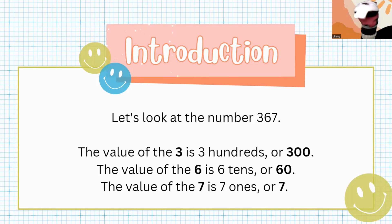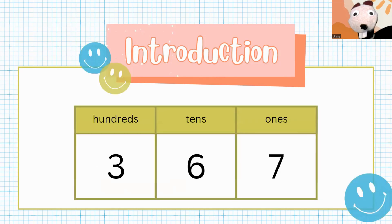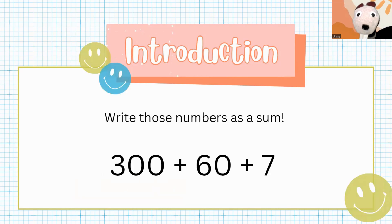Now, let's see if you can do this. So, the three is in the hundreds place, six is in the tens, and the seven is in the ones. So, to write this in expanded form, write this on your whiteboard. 300 plus 60 plus seven.